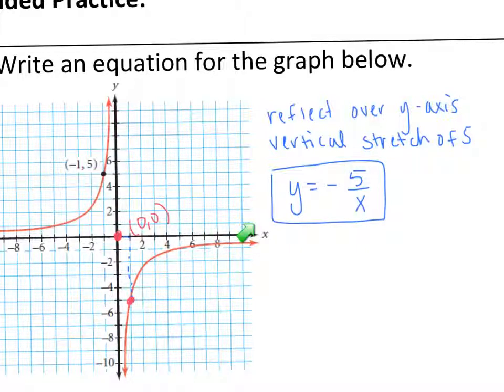And secondly, we also have a stretch. When we go over 1 from our starting point, we go down 5. So that means our vertical stretch has to be 5.